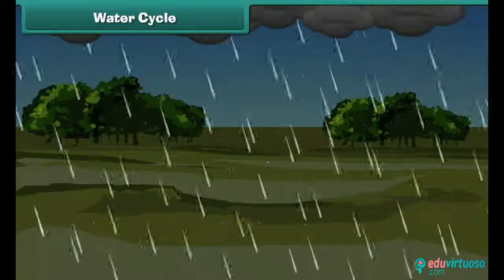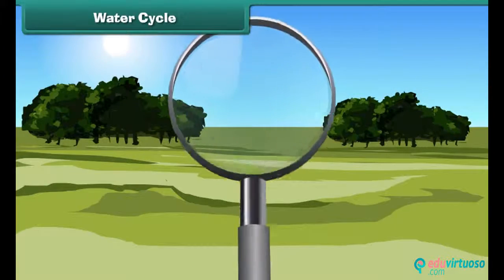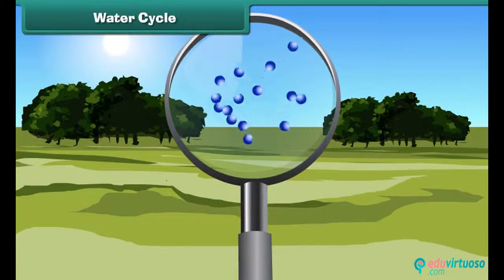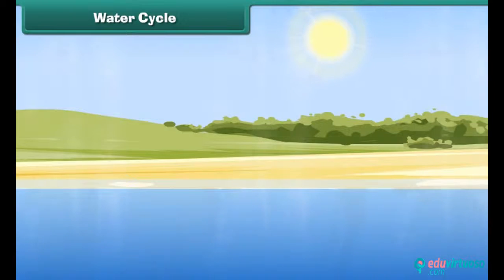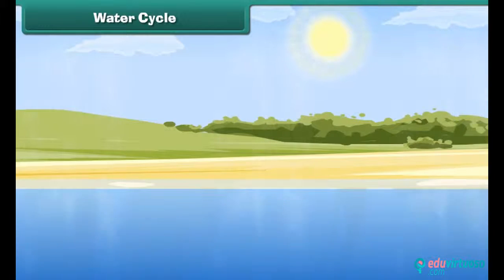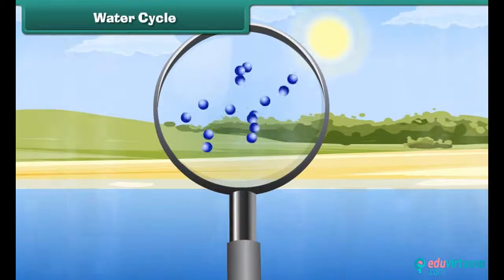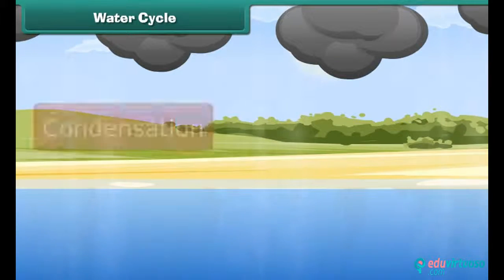Have you ever wondered where all the water in rain comes from? Well, there is always a certain amount of water vapor in the atmosphere. It comes from the earth's surface water like oceans, rivers, and lakes. The heat of the sun heats up the water from the surface of these reservoirs and changes water from the liquid state to the gaseous state. This is called evaporation. High up in the atmosphere, water vapors cool down and form clouds — this is called condensation.